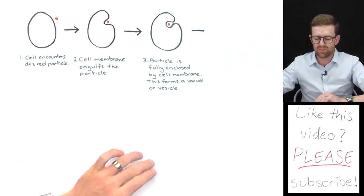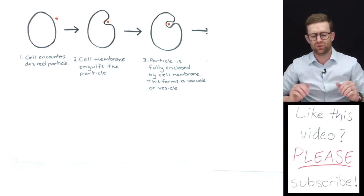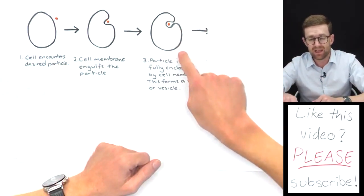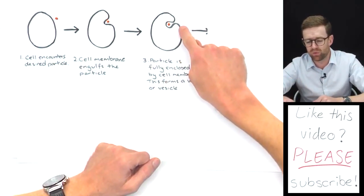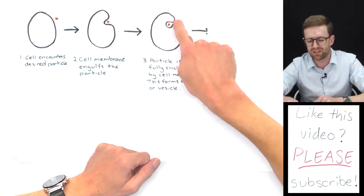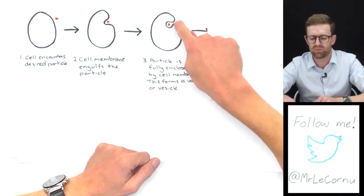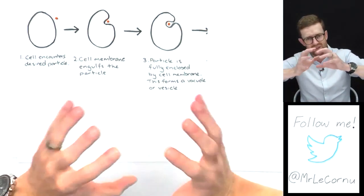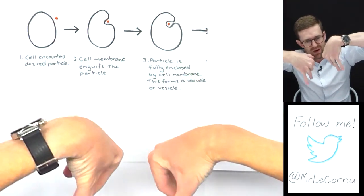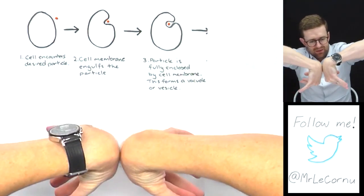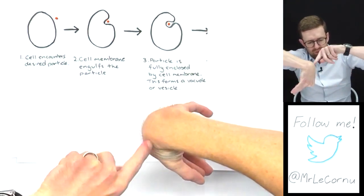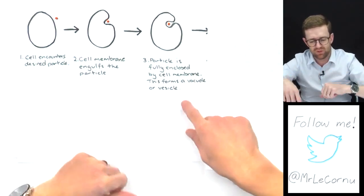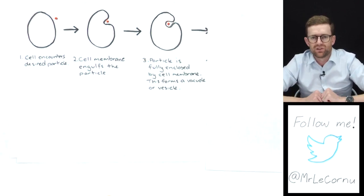What happens next is the particle is fully enclosed by the cell membrane. It completely wraps around, and in your diagram this bit's quite important because you'll notice that that membrane is just one continuous membrane wrapping around that particle. You can imagine in 3D it's actually wrapping right around and forming the particle vacuole or vesicle if it's really small.